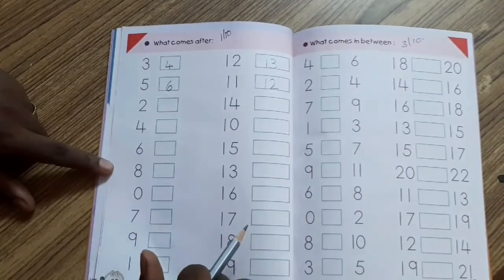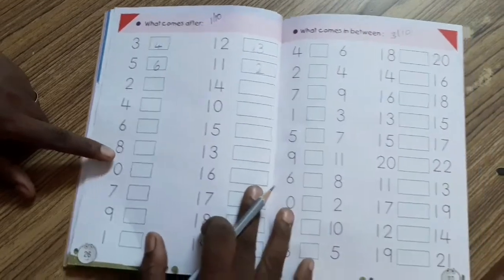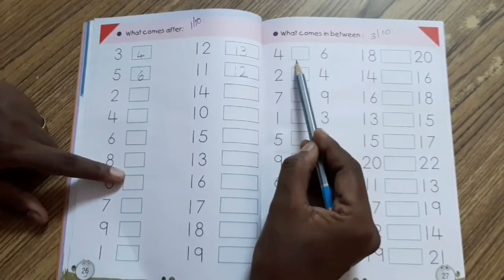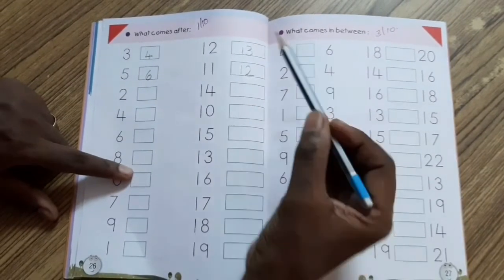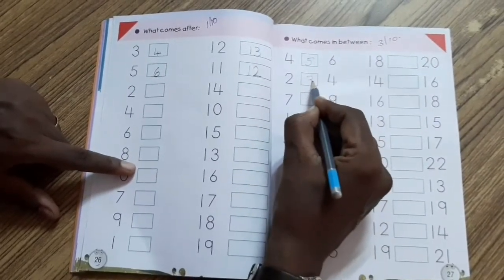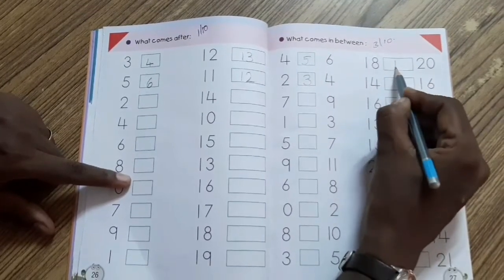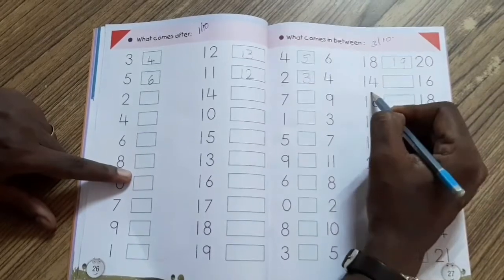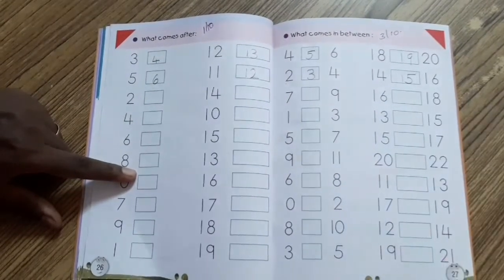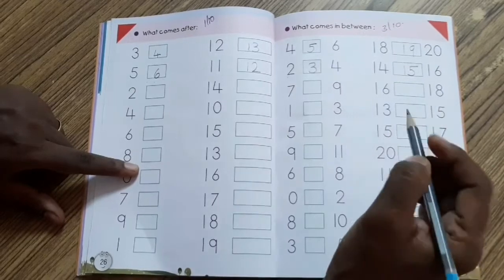Abhi baaki ke numbers maam aapko nahi batayegi. Your mama bhi aapko nahi batayegi. Aapko apna aap likhna hai, okay? Very good. Now, next page number 27. Kya hai? Between numbers. What comes in between? 4 or 6 ke beech mein konsa number aata hai? Very good. Number 5. What comes between number 2 and number 4? Number 3. What comes between 18 and 20? Very good. Number 19. What comes between 14 and 16? Very good. Number 15. Understood? Maam ne khi dekho kitna achhe se likha hai. Bada bhi likha hai aur dark bhi likha hai. Tuhu aisa dark likhna hai. Light light nahi likhna hai. Tumhe aisa press karna hai.